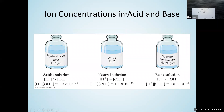To summarize the relationships: in a neutral solution, [H⁺] = [OH⁻] = 1×10⁻⁷ M, and their product equals 1×10⁻¹⁴. In an acidic solution, [H⁺] > [OH⁻], with [H⁺] > 1×10⁻⁷ M. In a basic solution, [H⁺] < [OH⁻], with [H⁺] < 1×10⁻⁷ M. In all cases, [H⁺]×[OH⁻] = 1×10⁻¹⁴.